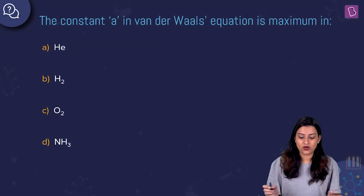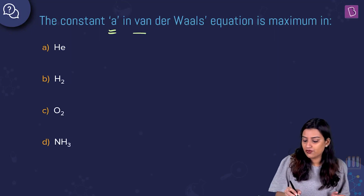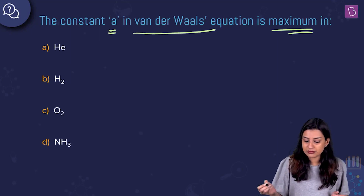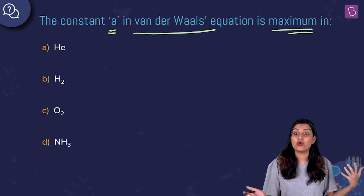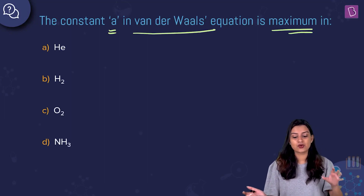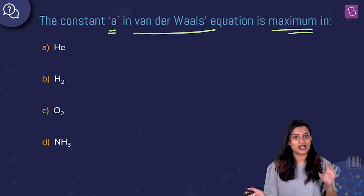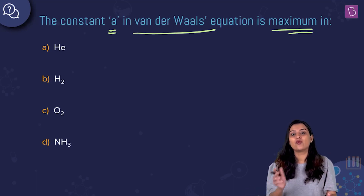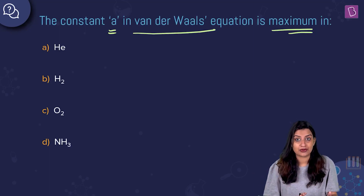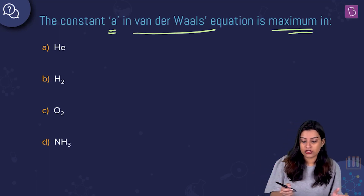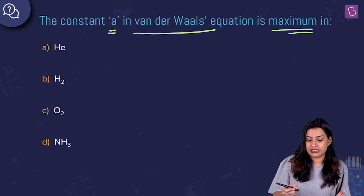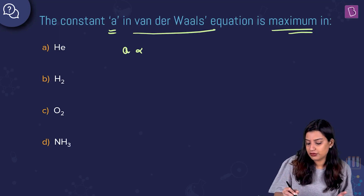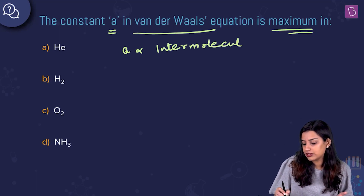The question asks which gas has the maximum van der Waals constant 'a' among He, H₂, O₂, and NH₃. The constant 'a' is the pressure correction term in the van der Waals equation, and it depends on the amount of intermolecular attraction — 'a' is directly proportional to intermolecular attractive forces.